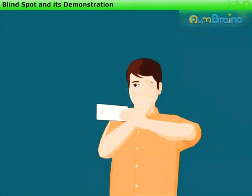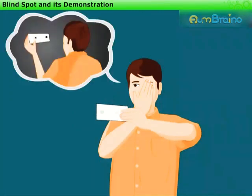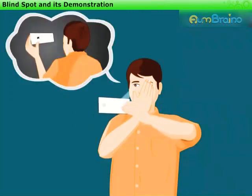Close your left eye. Look continuously at the cross. Move the sheet slowly towards you, keeping your eye on the cross. You will find that the round mark disappears at some point.